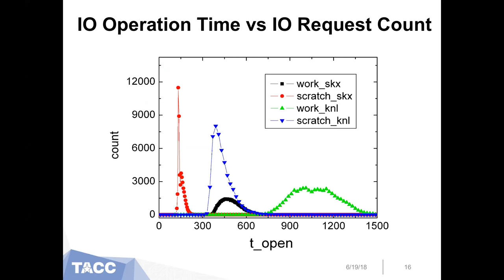Here is a typical result for the running time distribution of the open function on a TACC Stampede2 system. Stampede2 has two sets of compute nodes: Intel KNLs and Intel Skylake nodes, and it supports multiple file systems. We focus on two file systems — the workspace and the scratch space, both Lustre file systems. We have four combinations: Skylake on work, Skylake on scratch, KNL on work, and KNL on scratch. The Skylake is faster than KNL, and scratch is usually faster than the workspace. The I/O operation time for each combination is mostly distributed in a relatively small range, which we treat as normal status. If your I/O operation time is over that range, we treat that as anomalous and it should be slowed.